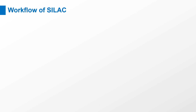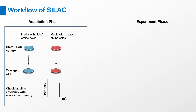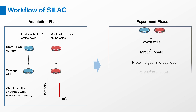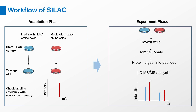The SILAC experiment can be divided into two phases: the adaptation phase and the experimental phase. In the adaptation phase, cells are grown in light and heavy SILAC medium until heavy amino acids are completely incorporated into the growing cells, which can be assessed by mass spectrometry. During the experimental phase, the two cell populations are subjected to different treatments according to the research aim. Subsequently, the mixed cell population or protein lysate is studied, and samples are analyzed with liquid chromatography with tandem mass spectrometry to identify and quantify the ratios of heavy peptides to light peptides.